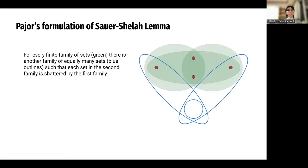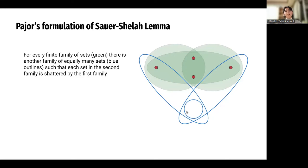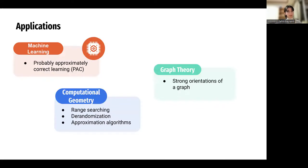There is also Pajor's formulation of the Sauer-Shelah lemma: for every finite family of sets, there is another family of equally many sets such that each set in the second family is shattered by the first family. In the example shown, we have three green sets and three blue sets, where the green sets shatter all the blue sets.